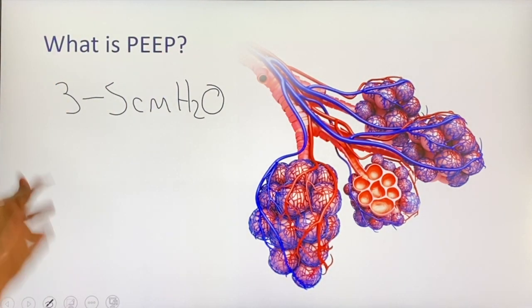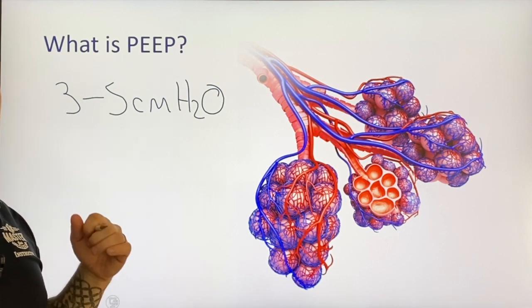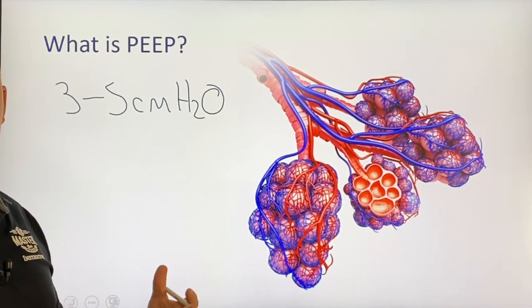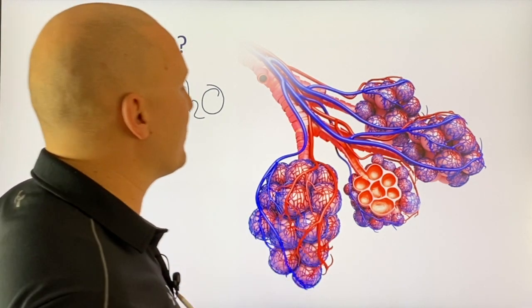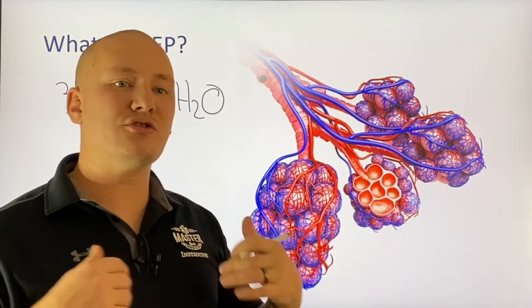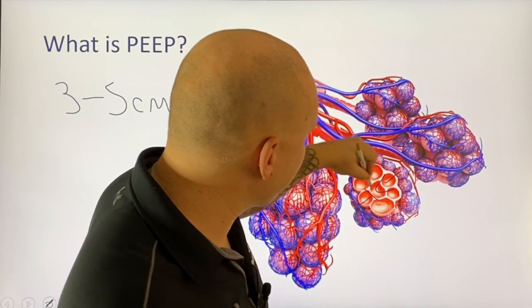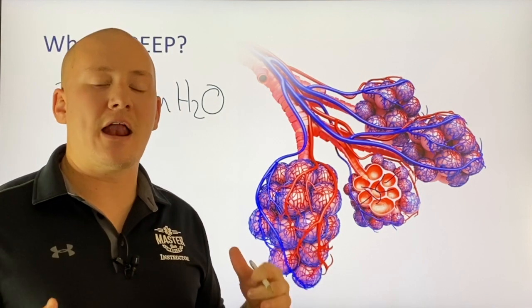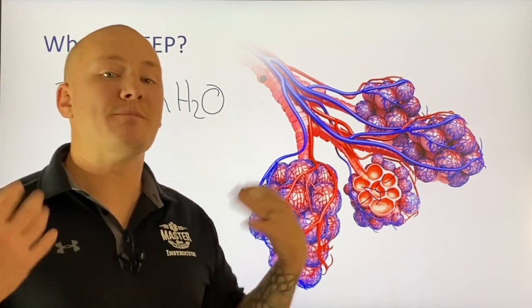By introducing PEEP and maintaining that physiological PEEP, we address the fact that respiratory distress patients typically lose some of that PEEP and can't keep their alveoli open enough to maintain good respirations and oxygenation. What PEEP is going to do is keep those alveoli from collapsing. In a respiratory distress patient, losing physiological PEEP increases the chance of alveolar collapse. The PEEP valve prevents this from happening without the patient needing to work for it, decreasing their work of breathing.